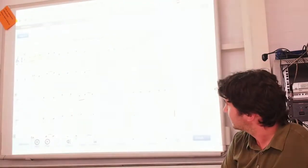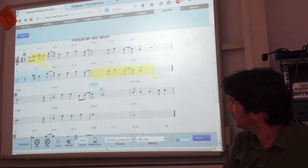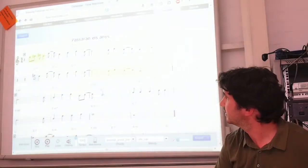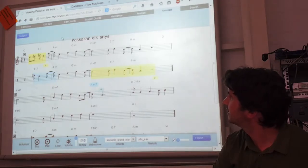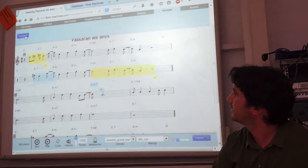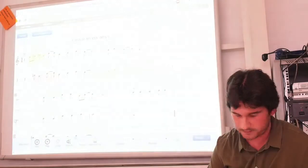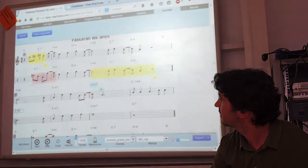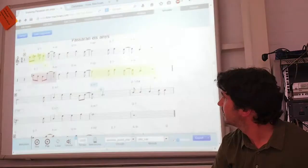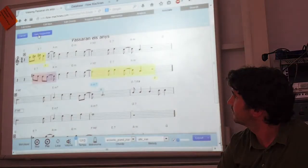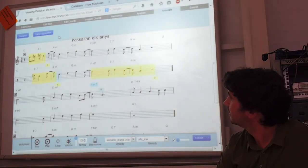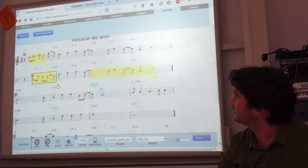So I can now make a suggestion here, for example. I can change these notes. I will select these notes. Then I will suggest, for example, just this. And I will save the suggestion. So now he can see the original and my suggestion and he can play it.